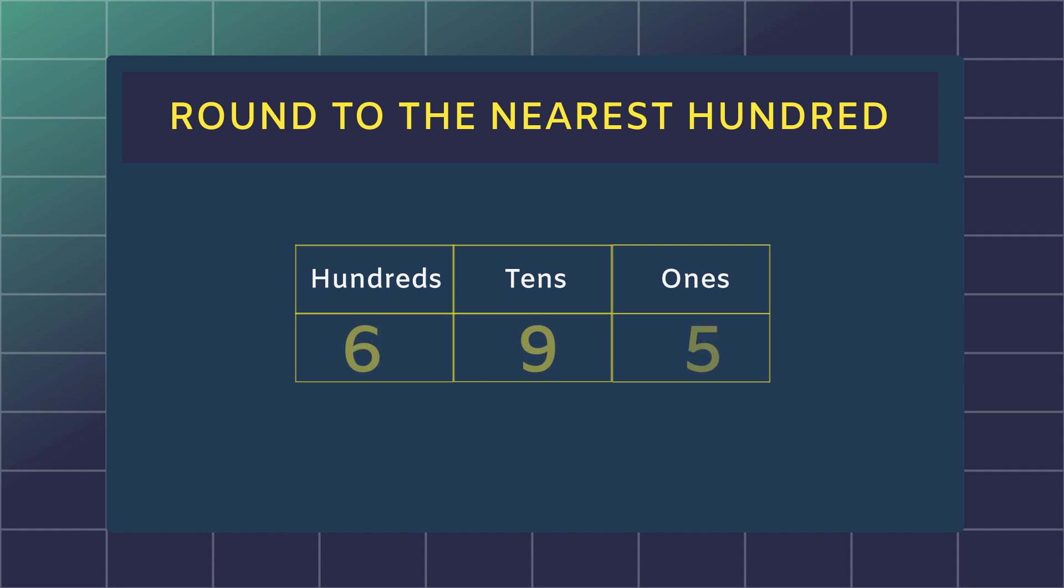If we have a number like 695, for example, we will start with the ones place. Round up the ten, which will round up the hundreds. In this case, the five round up the 90, and 695 will round up to 700.